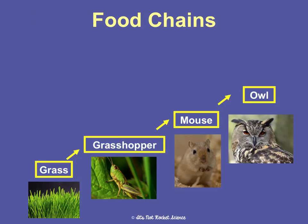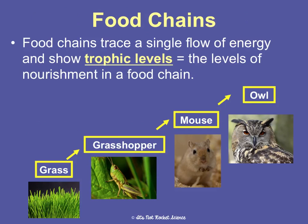Now let's talk about food chains. A food chain traces a single flow of energy and shows trophic levels, which are the levels of nourishment in a food chain. Here's an example: we have grass, and the arrows show where the energy is going. Grass is eaten by a grasshopper, so energy flows from grass into the grasshopper. Grasshoppers are eaten by a mouse, so energy flows into the mouse. The mouse is eaten by an owl, so energy flows into the owl. That's a single flow of energy in a food chain.